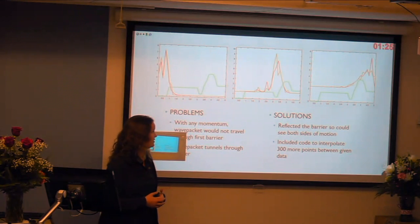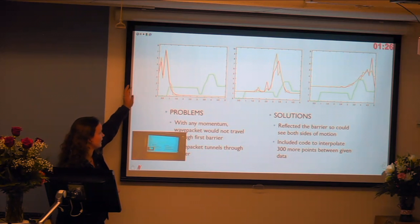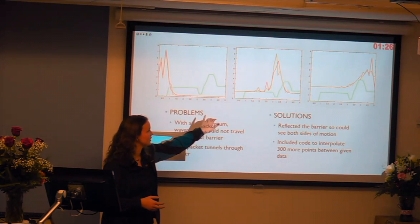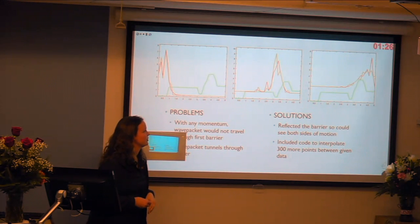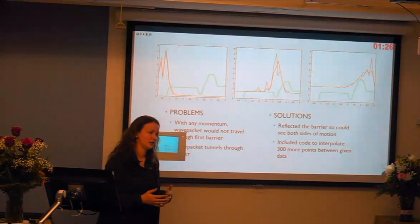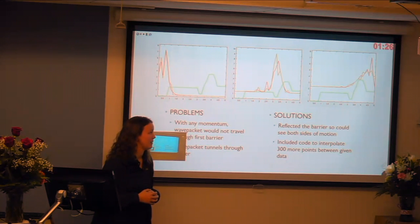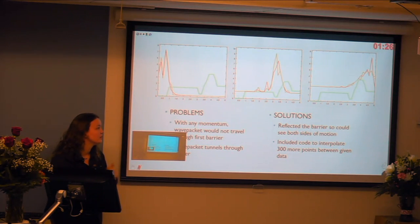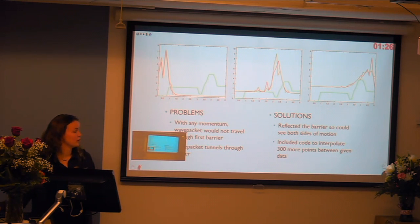I ran into some problems initially. The data I was given had only about 20 points. As you can see, it just tunnels through the first barrier at any momentum — these different momenta are just showing different starting locations. We tried starting in the middle, then starting at the end and proceeding backwards, and the same thing happened. To solve that, we interpolated more points, going up to 390 points using MATLAB, and we also reflected the barrier so we could see both the forward and backward directions.